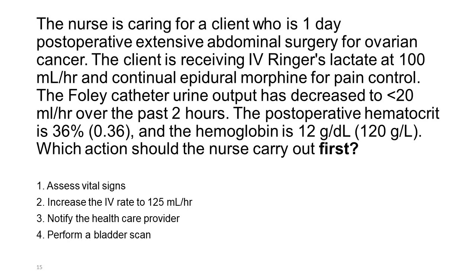The nurse is caring for a client who is one-day postoperative from extensive abdominal surgery for ovarian cancer. The client is receiving IV Ringer's lactate at 100 mL per hour and continual epidural morphine for pain control. The Foley catheter urine output has decreased to less than 20 mL per hour over the past two hours. The postoperative hematocrit is 36% and hemoglobin is 12 g/dL. Which action should the nurse carry out first? 1. Assess vital signs. 2. Increase the IV rate to 125 mL per hour. 3. Notify the healthcare provider. 4. Perform a bladder scan.